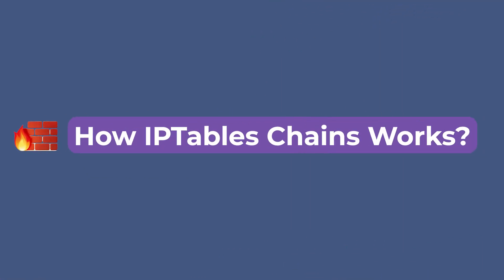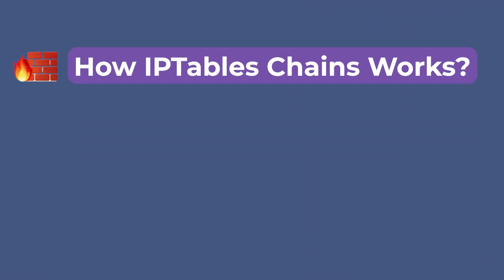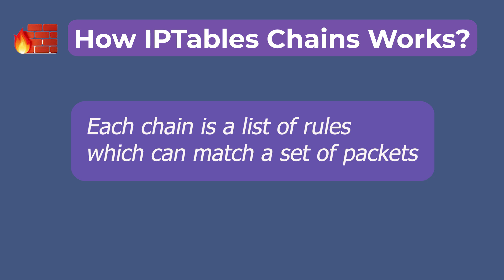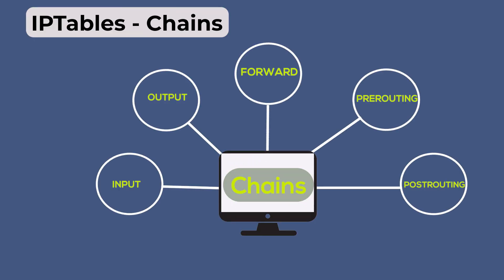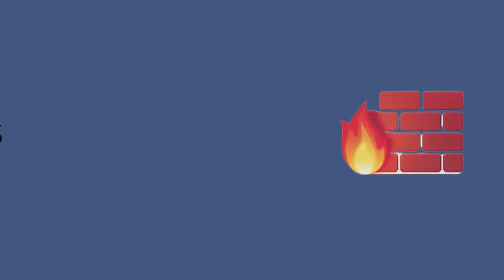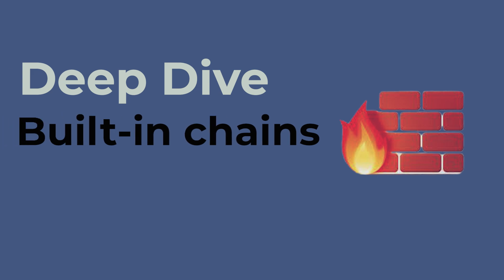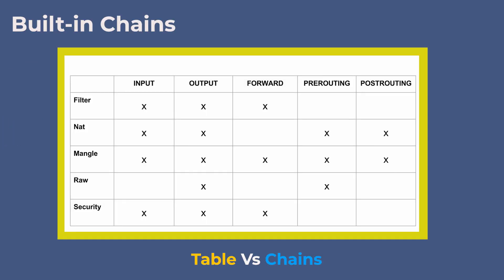Next, we will understand how IPtables chains work. Just like there are default tables, there are default chains. Each table comes with a set of predefined or built-in chains. The five chains are INPUT, OUTPUT, FORWARD, PREROUTING, and POSTROUTING. You might have noticed all these chains are capitalized — just like most things in Linux, chains are case sensitive. So if you want to refer to the INPUT chain, you have to do so using uppercase letters.